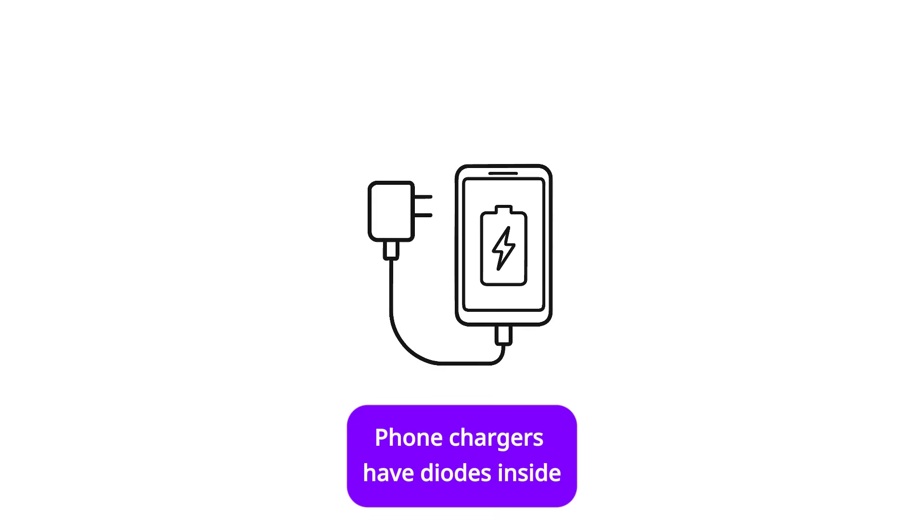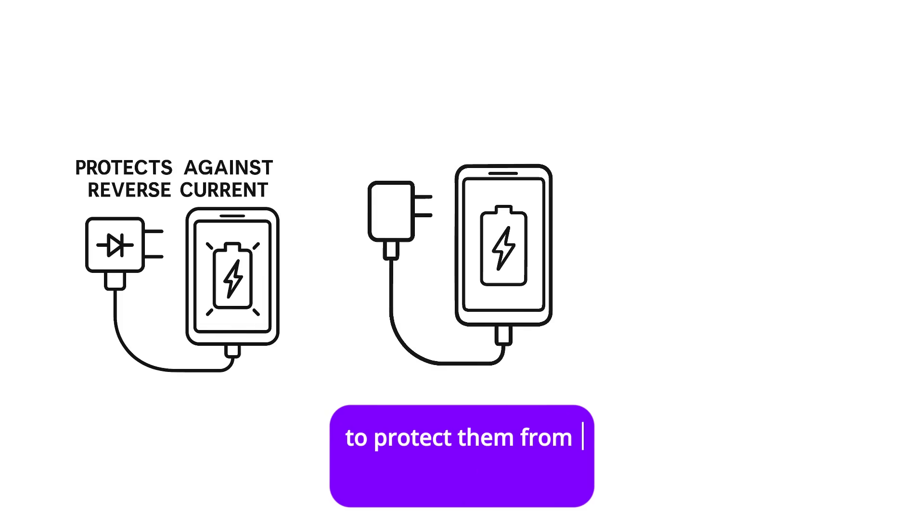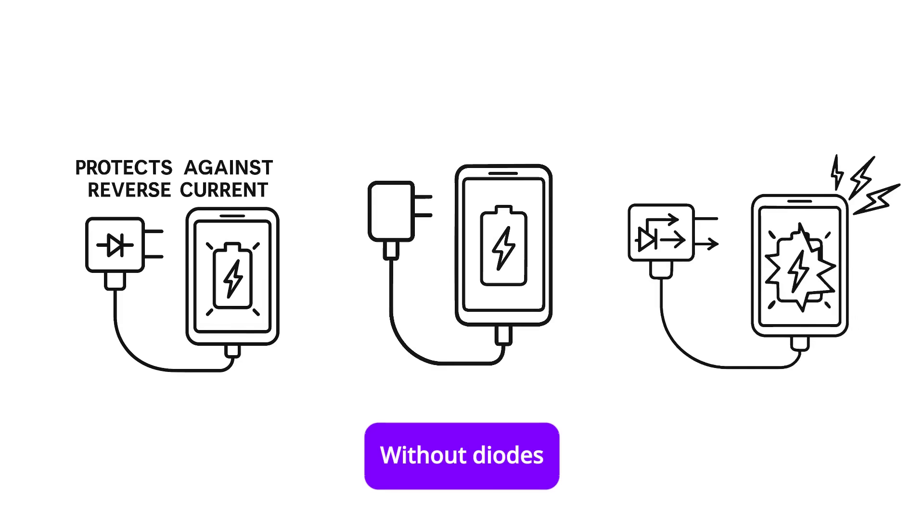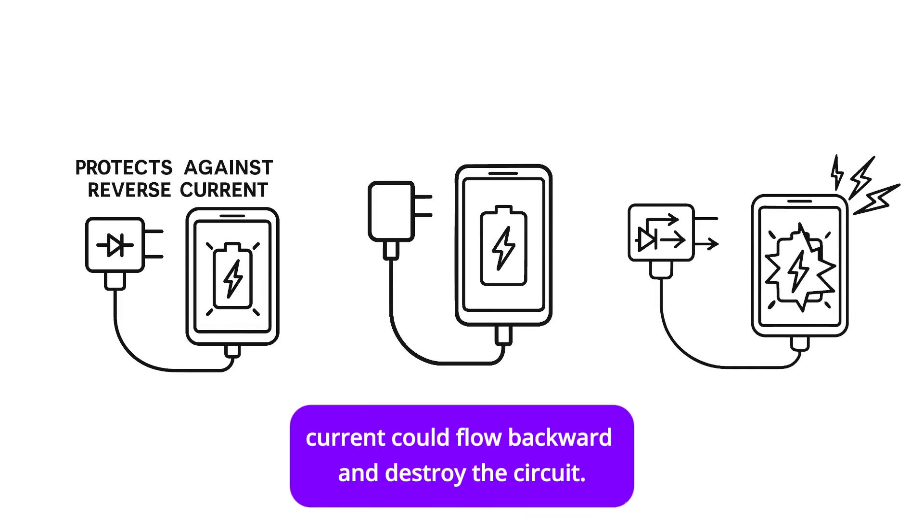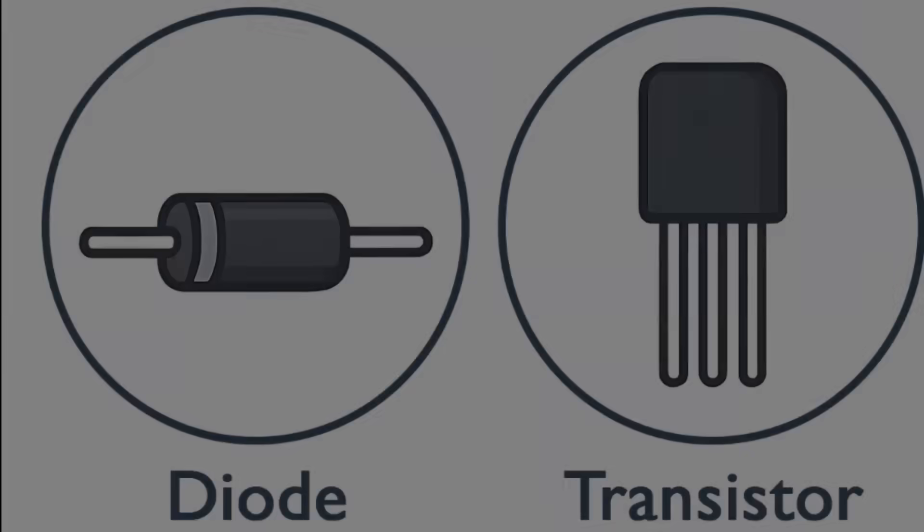Everyday example: phone chargers have diodes inside to protect them from reverse current. Without diodes, current could flow backward and destroy the circuit.